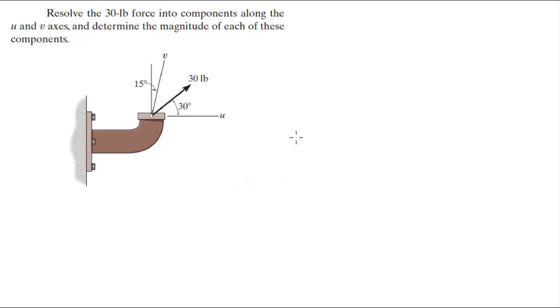So let me redraw this. We have a 30 pound force going this way. Then you have a V component, let's call this V, and you have a U component. The U component is here but I moved it over here to form our triangle and make the problem easier to see.